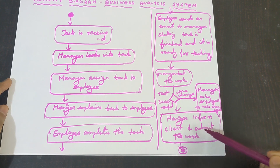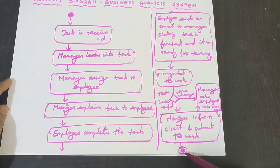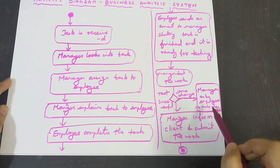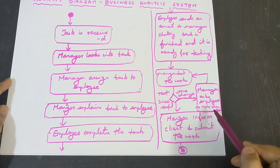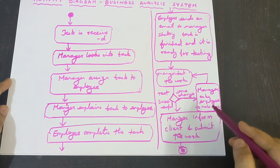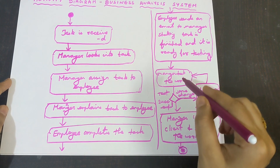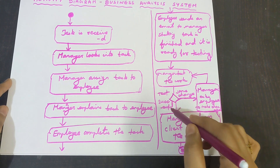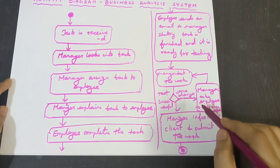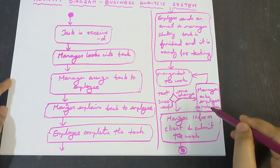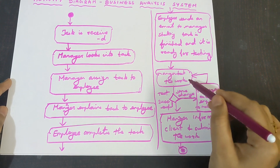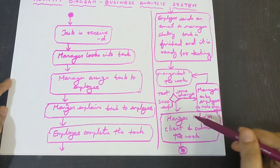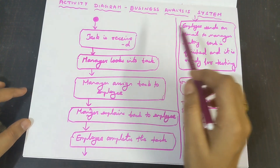After the manager informs the client and submits the work, the process ends. The end symbol is a bigger circle with a smaller colored circle inside. After the manager asks the employee to make changes, you draw an arrow back to 'manager tests the work,' because after making changes the employee resubmits and the manager tests again. If successful, the process ends; if not, changes are requested again and the process keeps moving until completion.